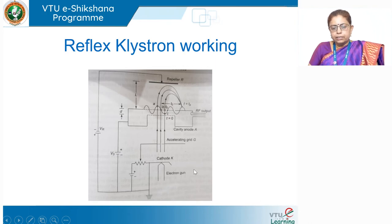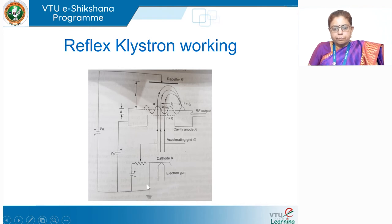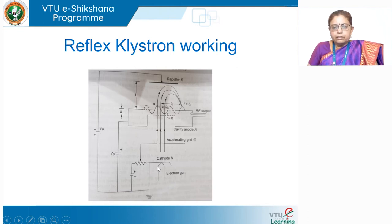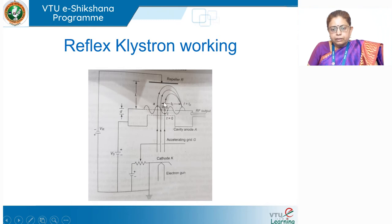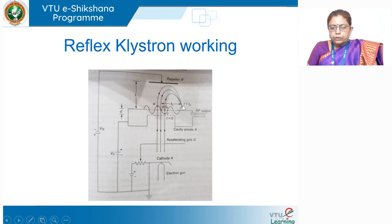Now let us look at how the tube works. In this diagram I have shown only the required portion of the klystron oscillator tube without enclosures. Here is the electron gun having the cathode heated by a filament, connected to a negative supply. Then you have an accelerating grid connected to a small positive supply via a potentiometer — varying this varies the potential on the accelerating grid. The arrows indicate three sets of electrons. Here is the re-entrant cavity and the repeller connected to a very high negative potential.